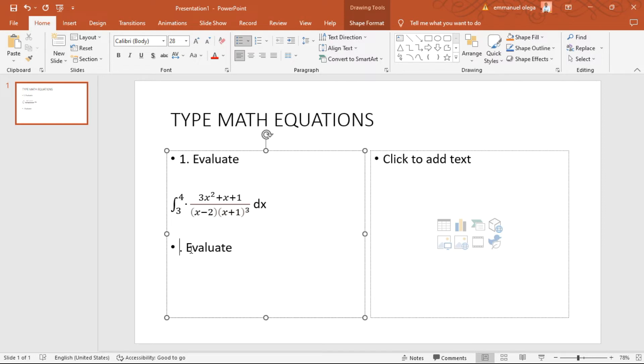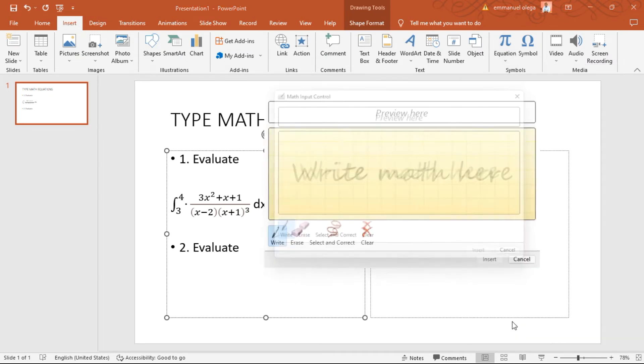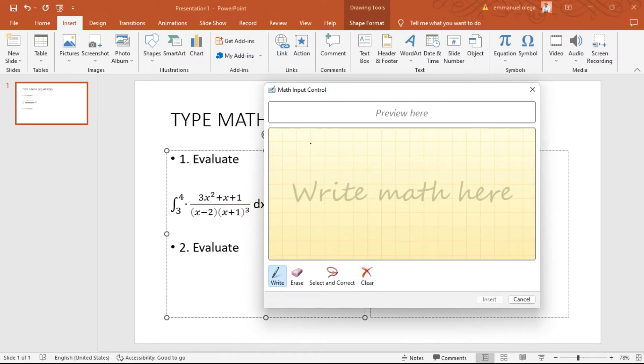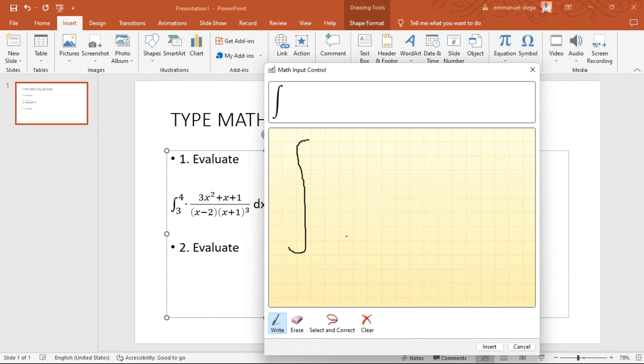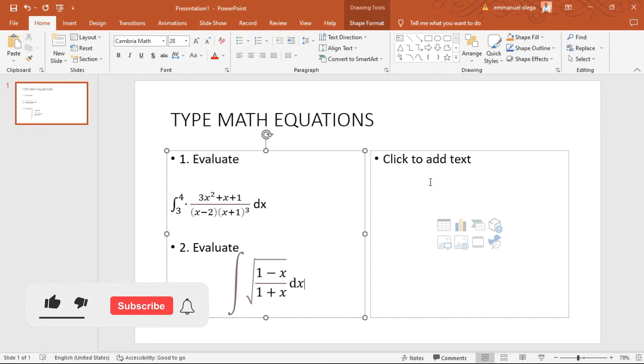This is option number two. Let's try inserting the equation again. Let's insert an ink equation. All right, then let's try another integral. I'm going to have values inside the roots: 1 minus x over 1 plus x. So it's time to just remember to type in dx. Then let's insert that. Okay, that's looking good, that's looking fantastic.